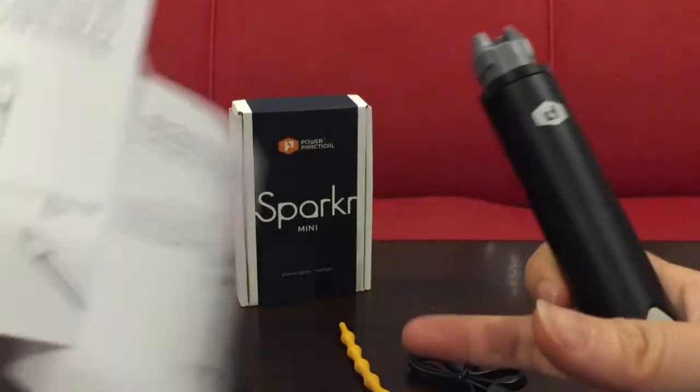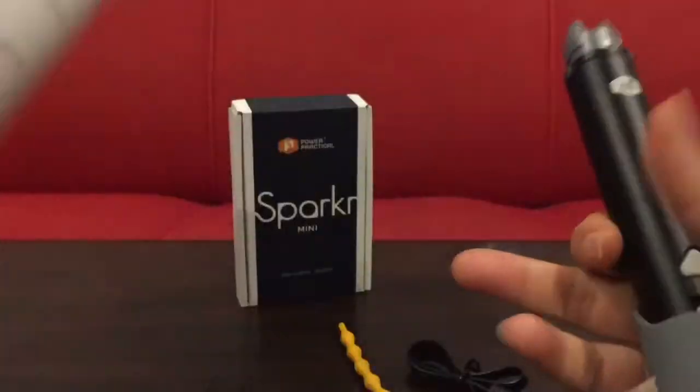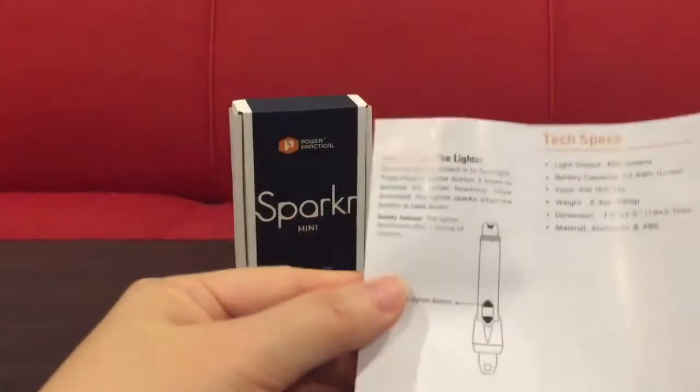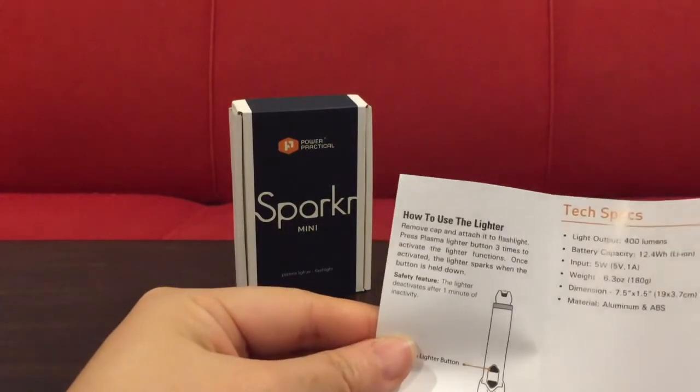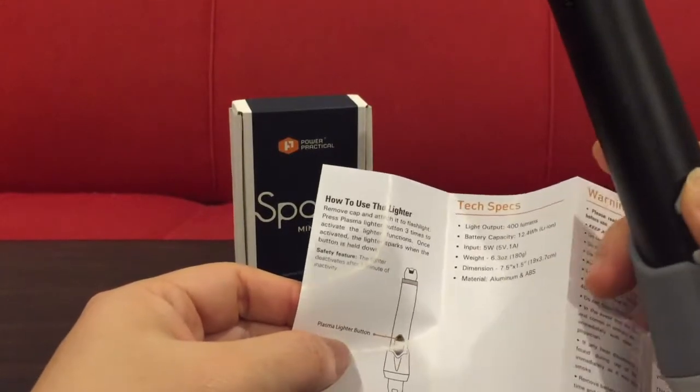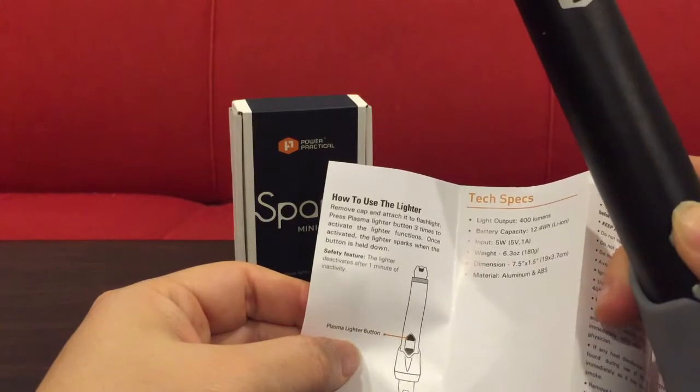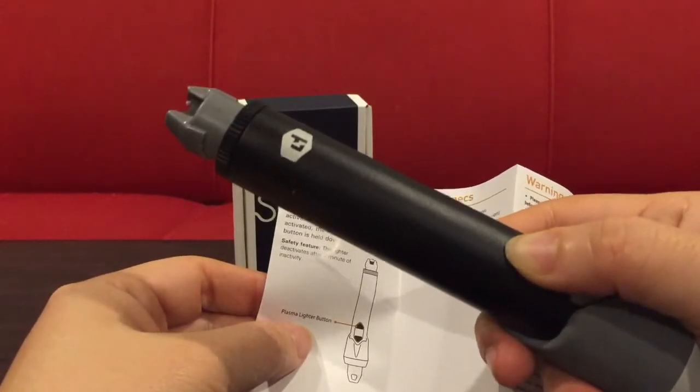That doesn't work. Let's see. How to use lighter. Remove cap and attach it to flashlight. Press plasma lighter button three times to activate the lighter functions. Once activated, the lighter sparks when the button is held down. One, two, three.